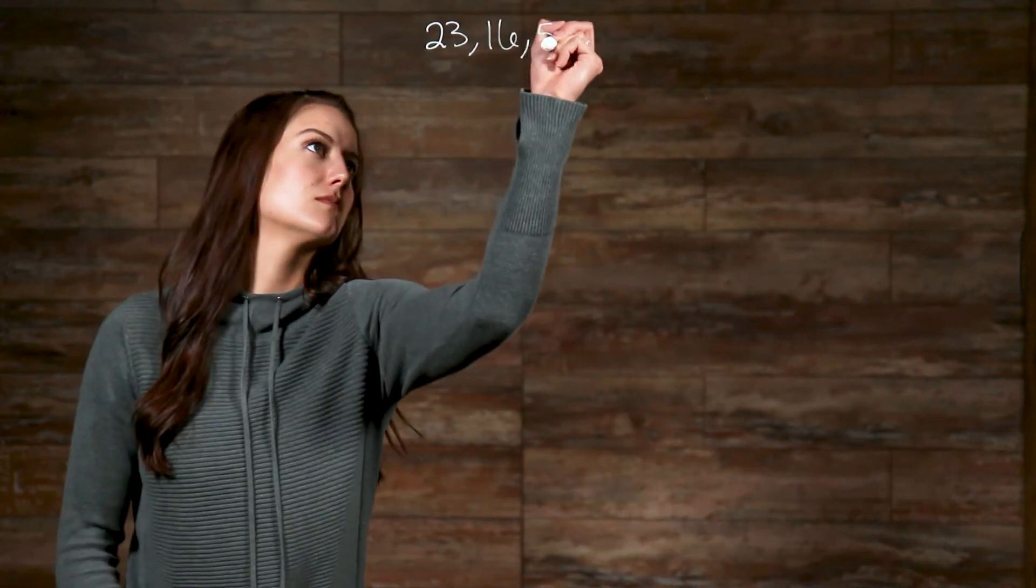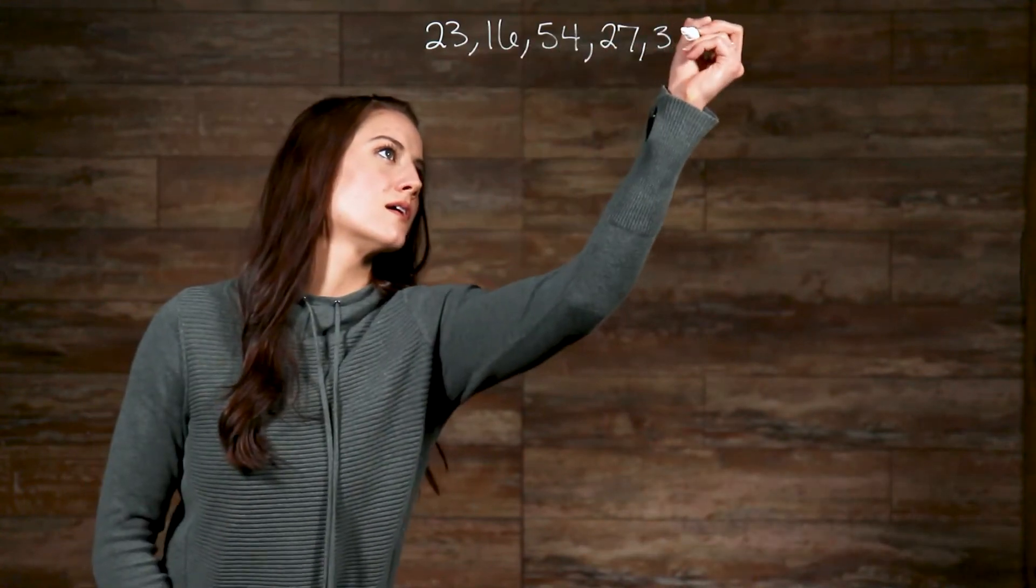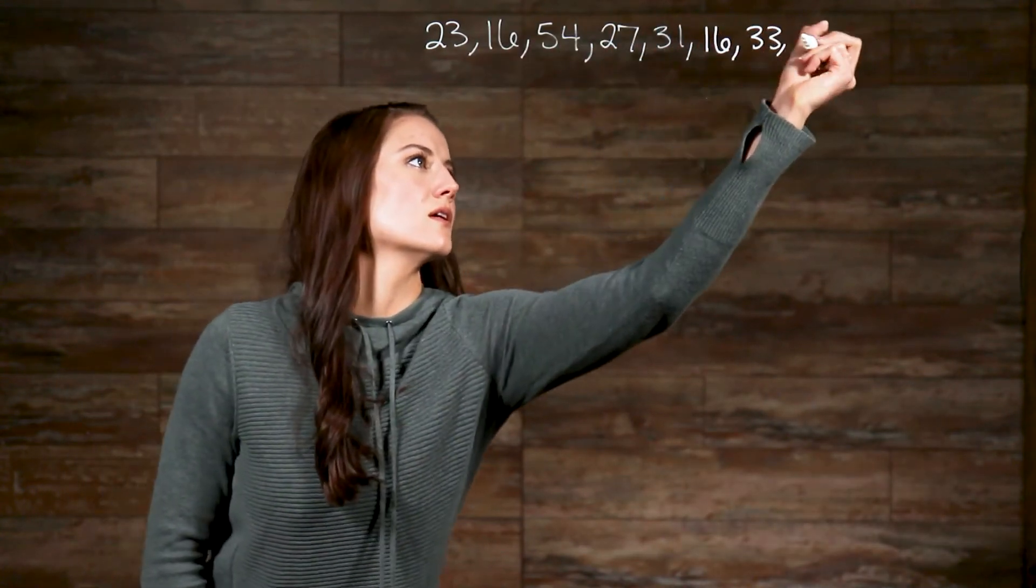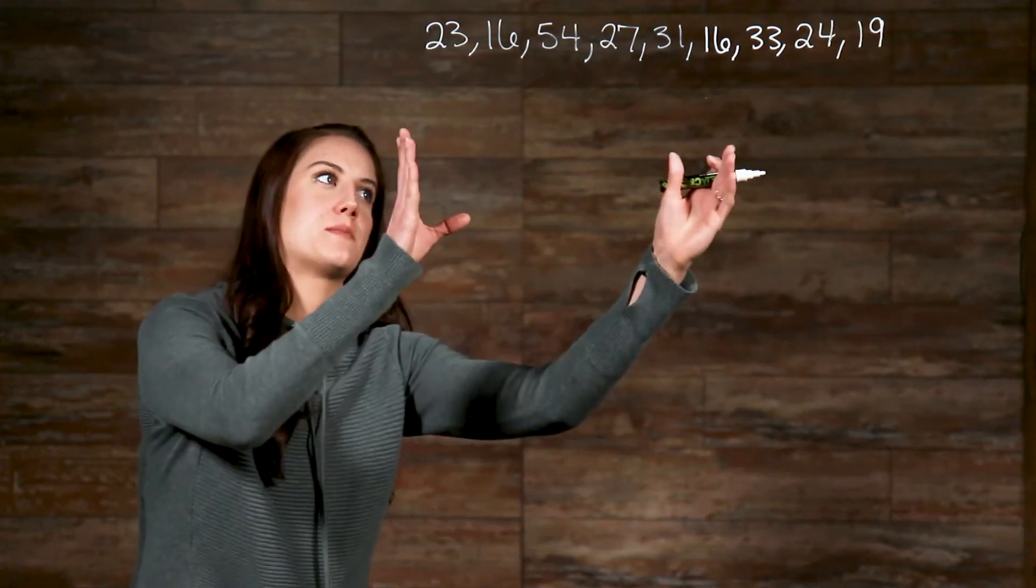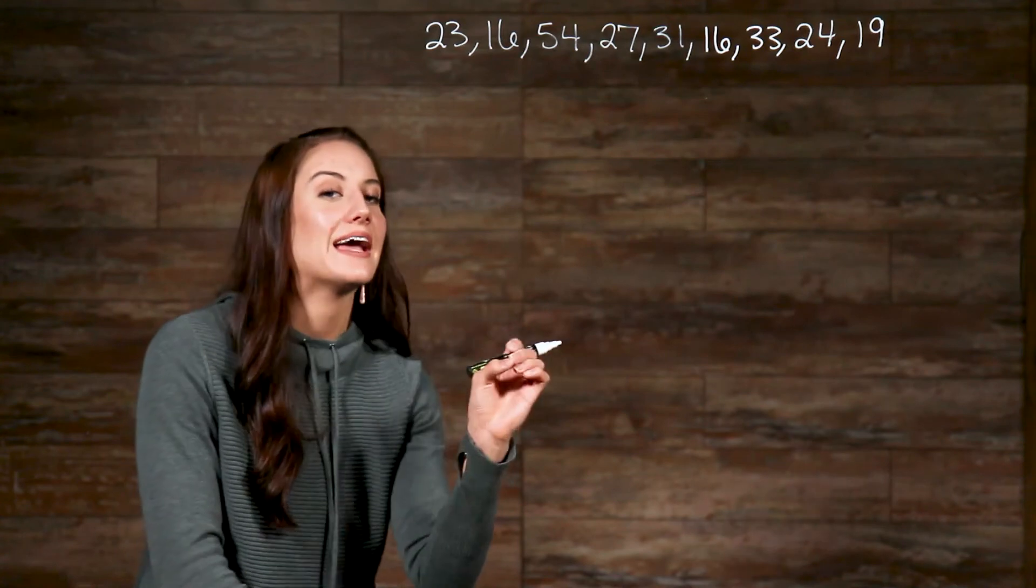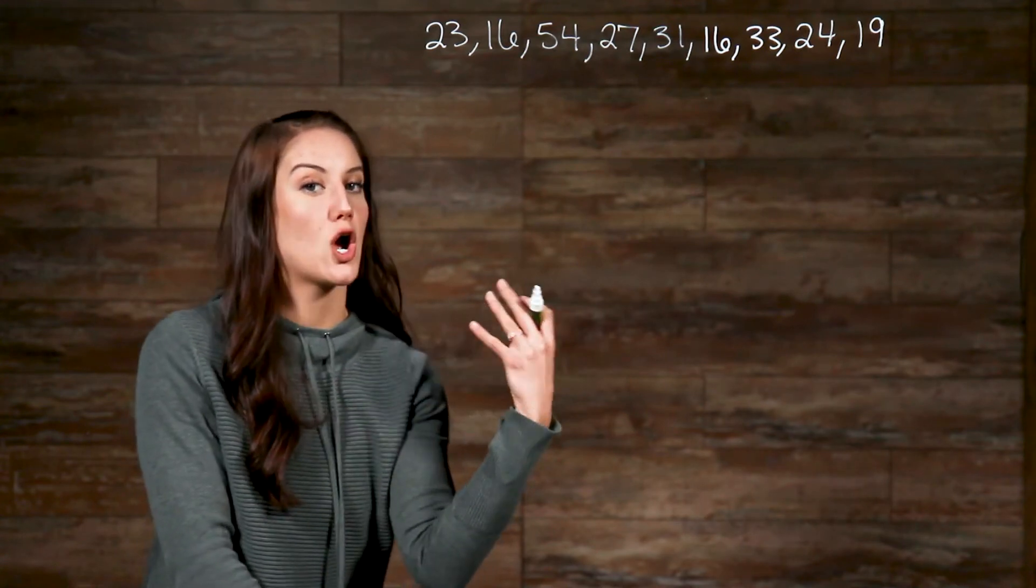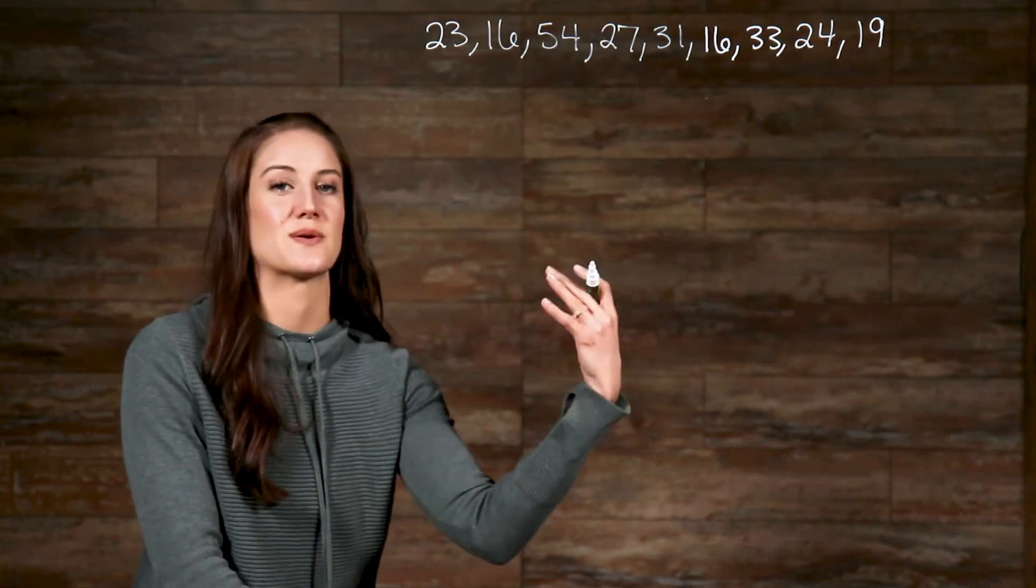First, the mean. Let's say we have a list of nine numbers. So, to find the mean, we need to add up all the numbers in the list, then divide by the amount of numbers that there are, which we know is nine, because we have nine numbers.